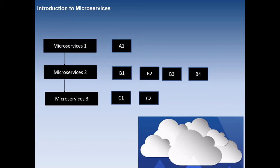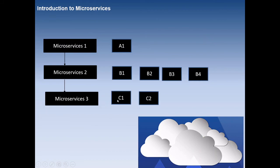For example, microservice one has one instance, microservice two has four instances (B1, B2, B3, B4), and microservice three has two instances. When microservice one has more load, it should be able to bring up another instance — this can be achieved using the cloud. Microservice two today has four instances, but tomorrow if the load is minimal you can scale down to one instance.